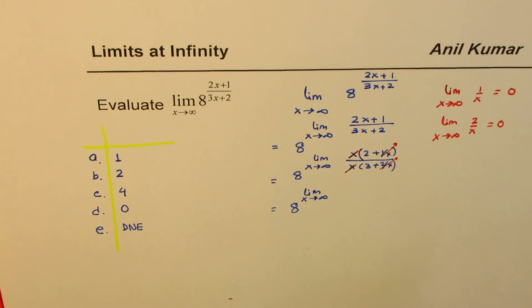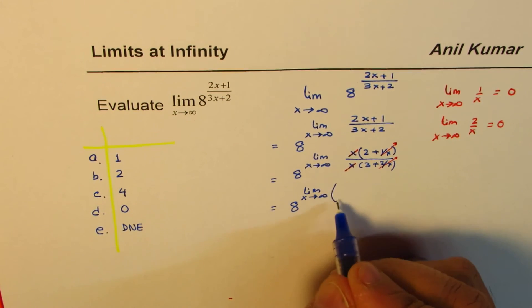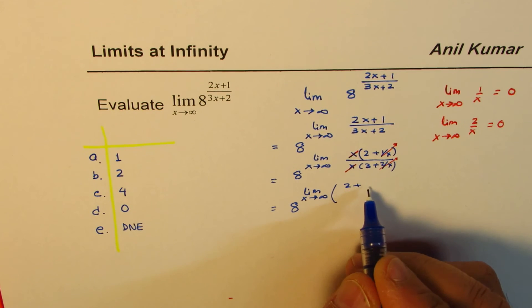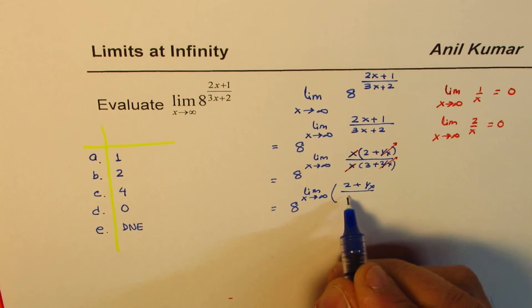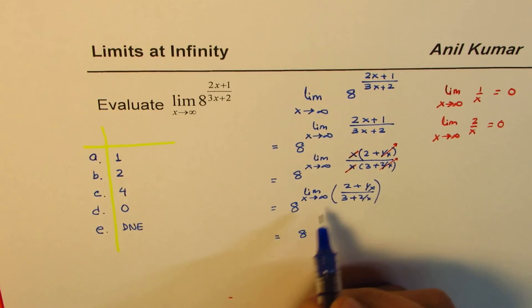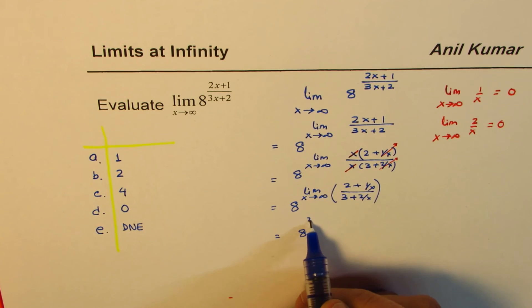So what are we left with? Once we cancel this, we get 2 plus, let me write 1 over x for the time being, and then I'll cancel. 2 over x. And that equals 8 to the power of 2 over 3.